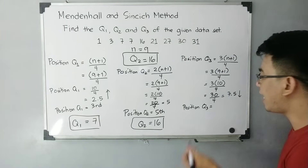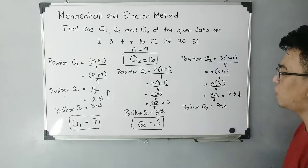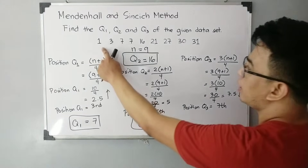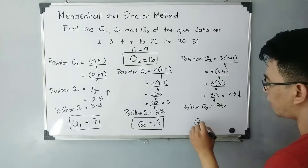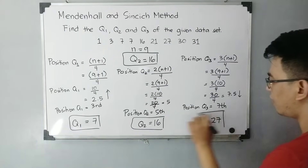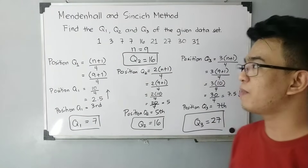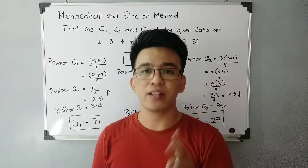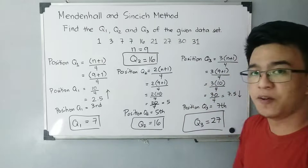The position of the upper quartile is 7th. Counting to the 7th value in the dataset gives us 27. Therefore, quartile 3 is 27. I hope the first method — the Mendenhall and Sinich method — is now clear on how to calculate the lower quartile, middle quartile, and upper quartile.